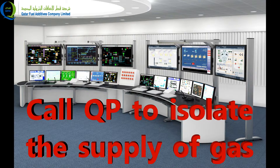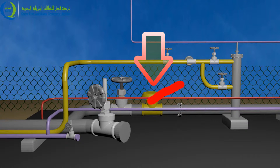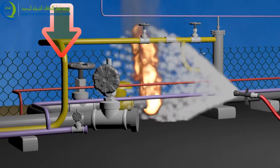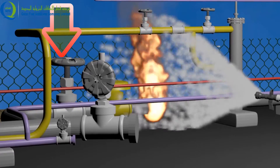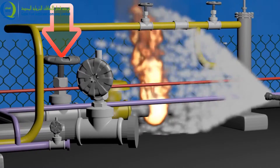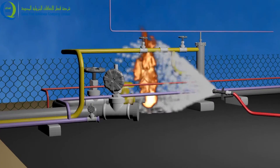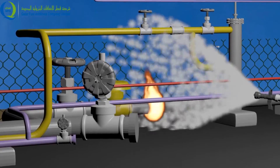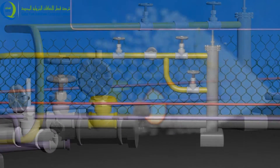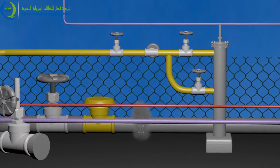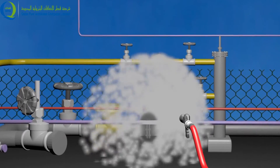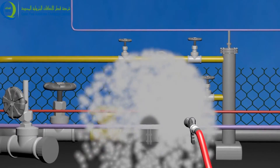The best way to control this type of fire is to isolate the gas supply. Contact QP to stop the gas supply. Isolate the UV remotely, cool the area, and close the local manual valve with the protection of a water shield. After control of the pressurized flame, residue leaking gas may ignite again. Suppress the unburned leaking gas with water and keep cooling the area until the gas supply has been completely isolated.